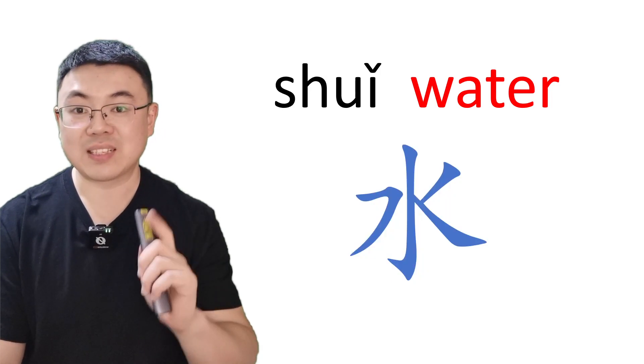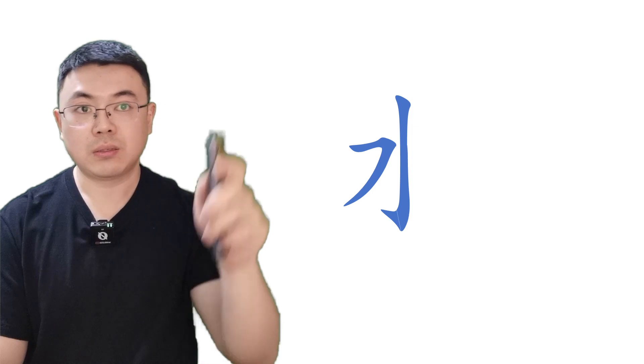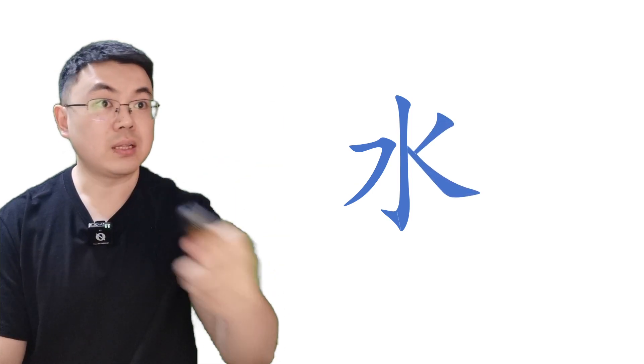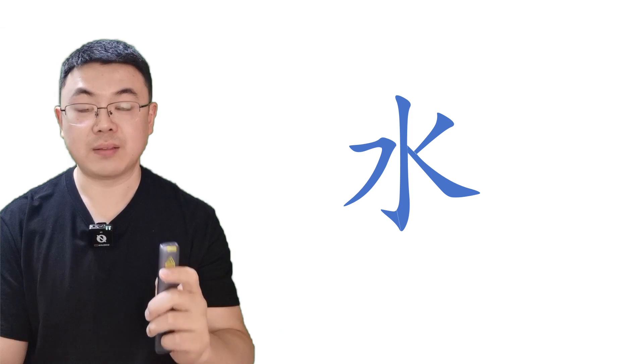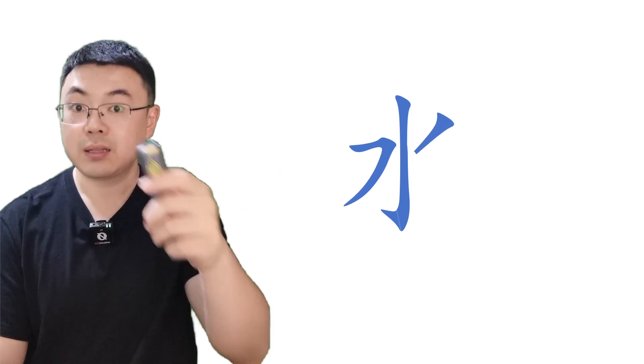Now, let us see how it is written. Middle preceding sides. First stroke, shu gou, one stroke. Second stroke, on the left side, heng pie. On the right side, pie na. Again, shu gou, heng pie, pie na.